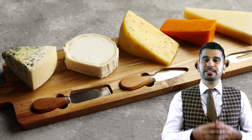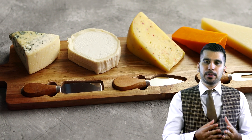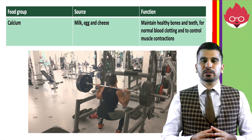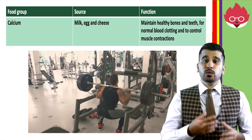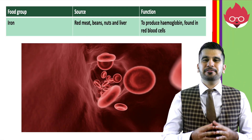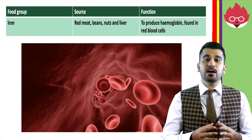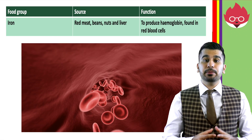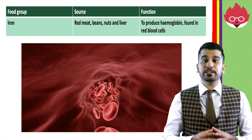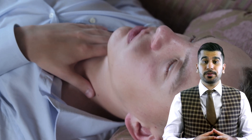Calcium, found in milk, eggs, and cheese, maintains healthy bones and teeth and allows normal blood clotting. It can also control muscle contractions. Iron, found in red meat, beans, nuts, and the liver, is an important part of haemoglobin, found in red blood cells. A lack of iron can cause a disease called anaemia, which causes tiredness and a shortness of breath.